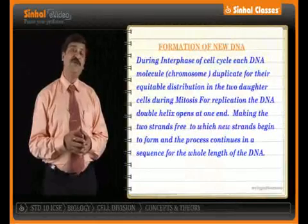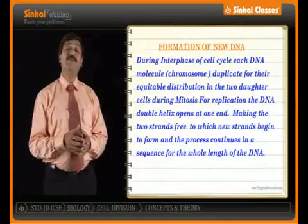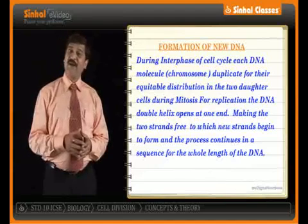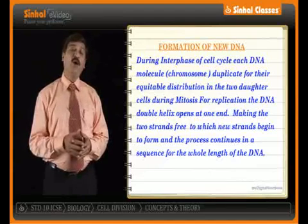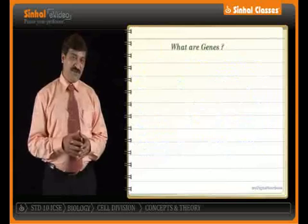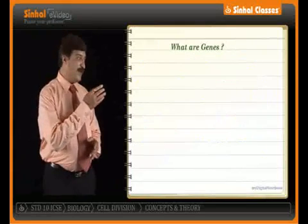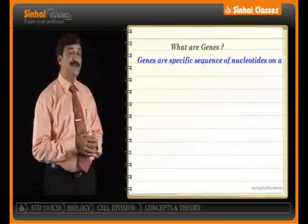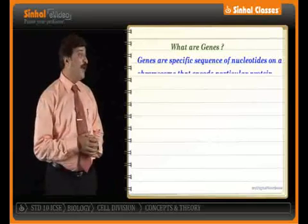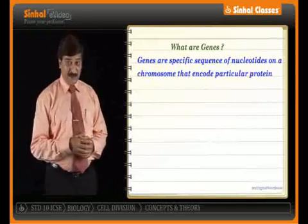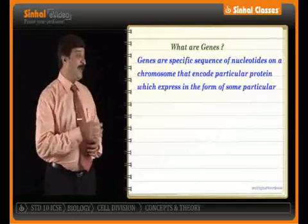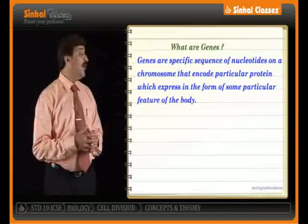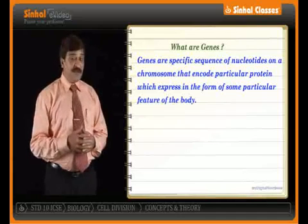The process of replication results in the formation of daughter DNA. We will conclude the chapter with what are genes. When we are talking about genes, genes are specific sequences of nucleotides on a chromosome that encode a particular protein, which expresses in the form of some particular feature of the body.